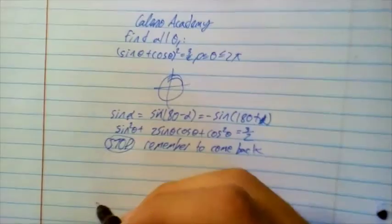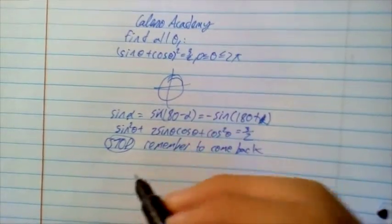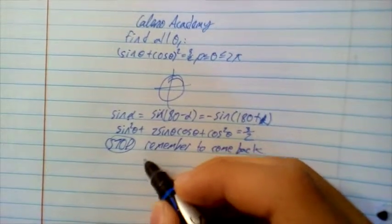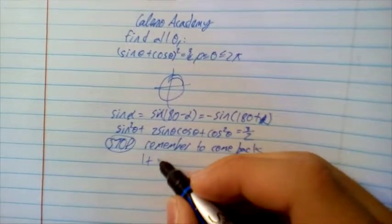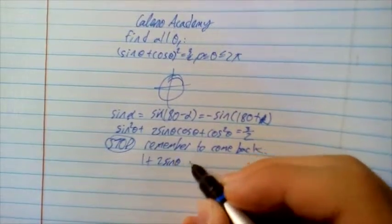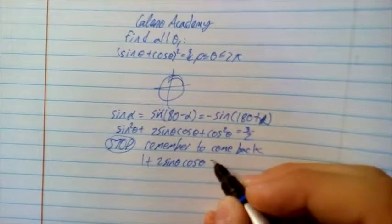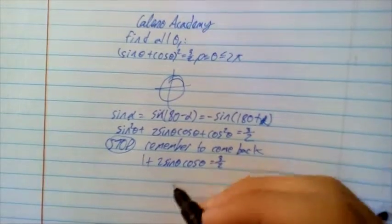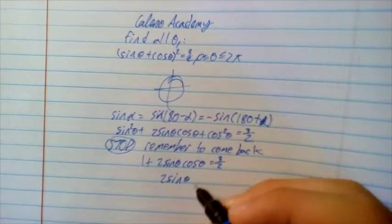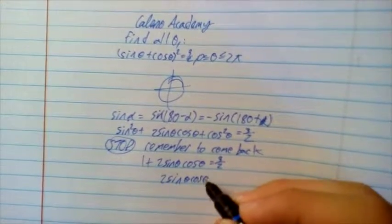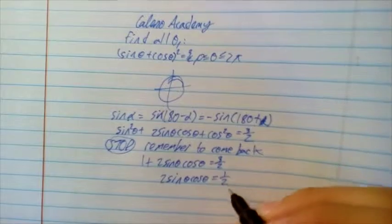Now, going on, we have that 1 plus 2 sin theta times cos theta is equal to 3/2, and that therefore 2 sin theta times cos theta is going to equal 1/2.